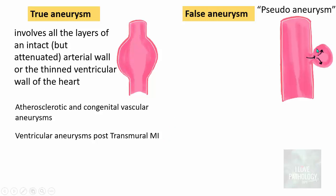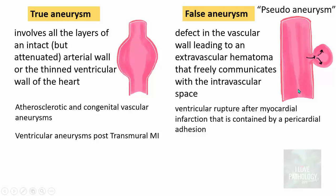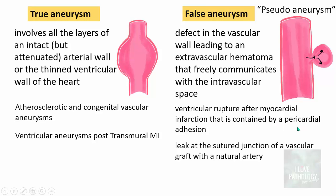A false aneurysm or pseudoaneurysm is basically a defect in the vascular wall which leads to an extravascular hematoma, and this hematoma freely communicates with the intravascular space. It does not involve all the layers of the blood vessel. Examples include ventricular rupture after myocardial infarction contained by a pericardial adhesion, or a leak at the sutured junction of a vascular graft with a natural artery.